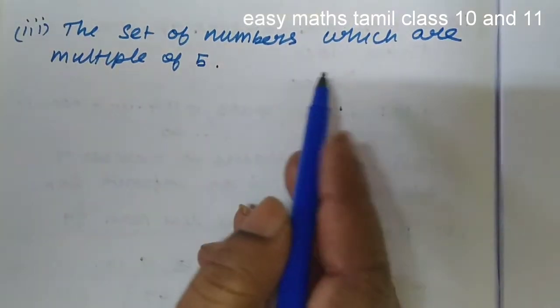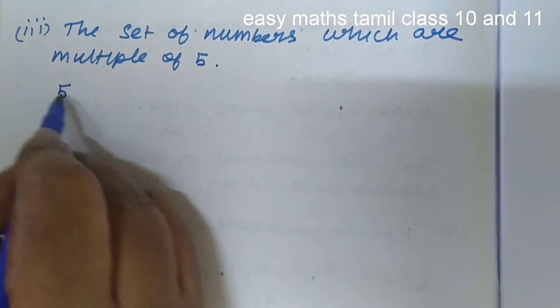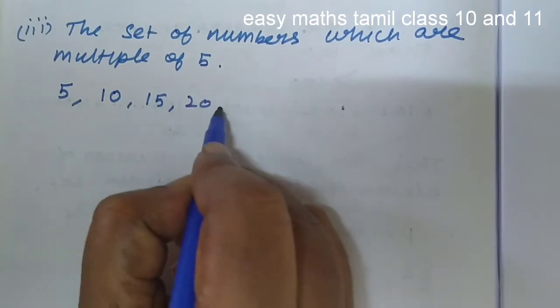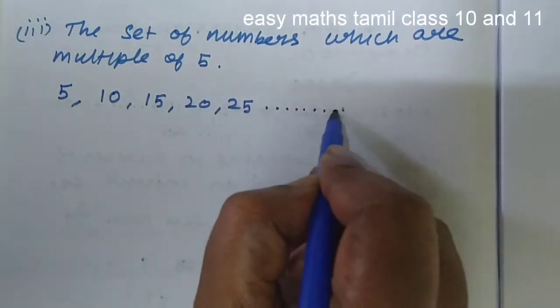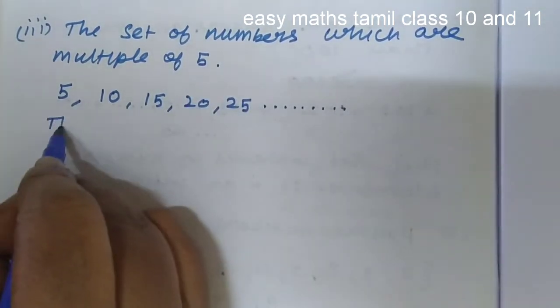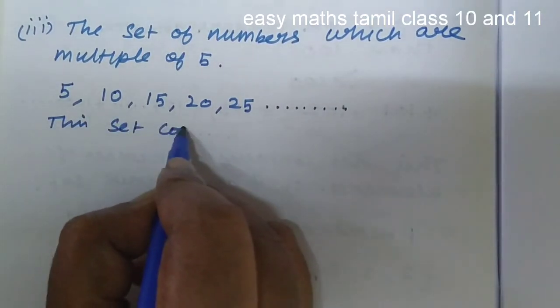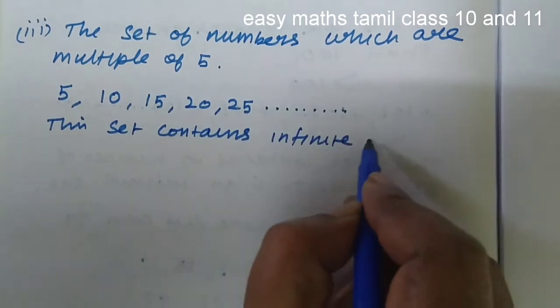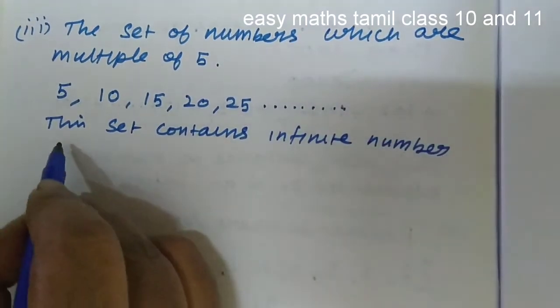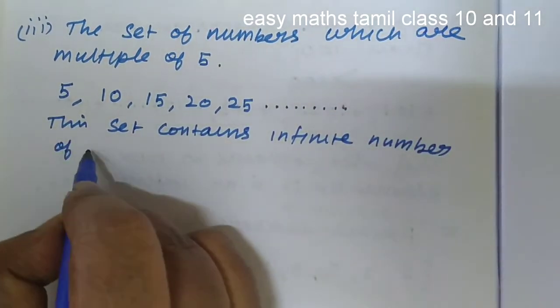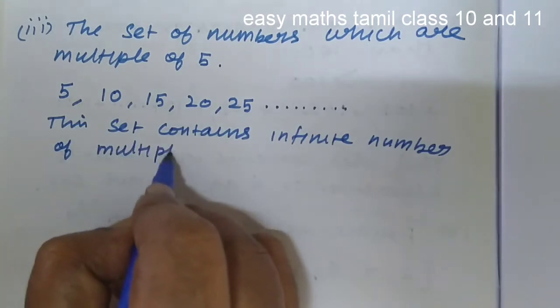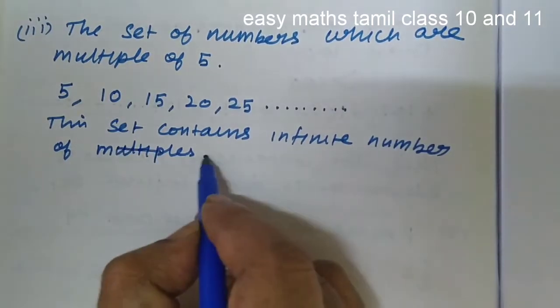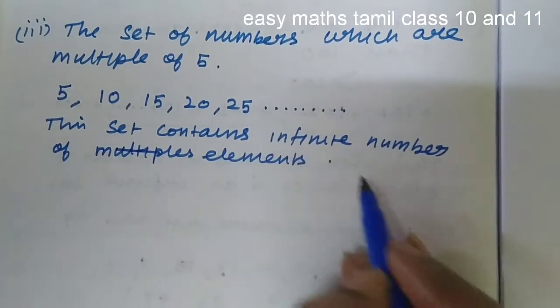The numbers which are multiple of 5 are 5, 10, 15, 20, 25... This set contains infinite number of elements which are multiples of 5.